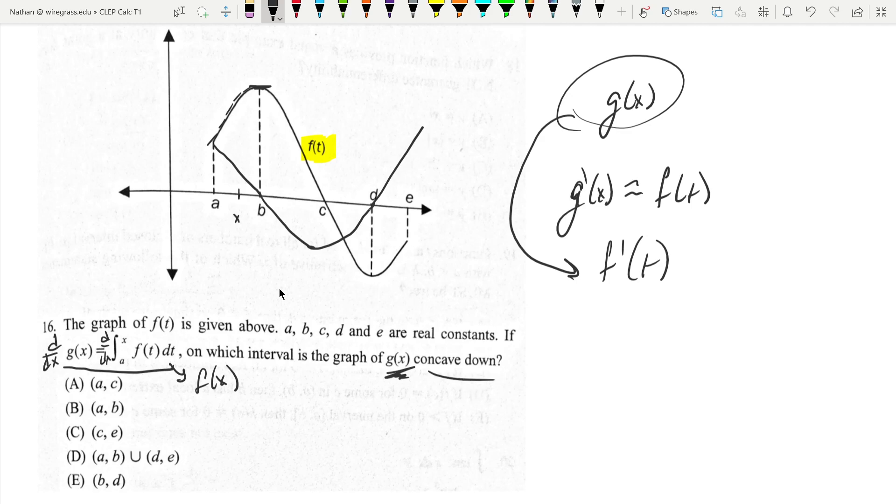So when is this second derivative or this derivative of f of t? When is it negative? It's negative on this interval, b to d. And that is E.